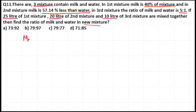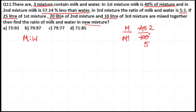In the first mixture, milk is 40% of the mixture — that means 40 out of 100. This is a milk-to-mixture ratio, not milk-to-water. If the mixture is 100 parts, milk is 40 and water is 100 minus 40, which is 60. Simplifying by dividing by 20: mixture becomes 5 parts, milk is 2 parts, water is 3 parts. So milk to water ratio is 2:3.